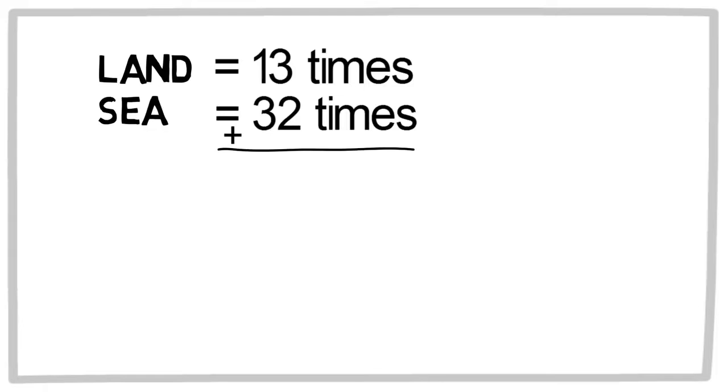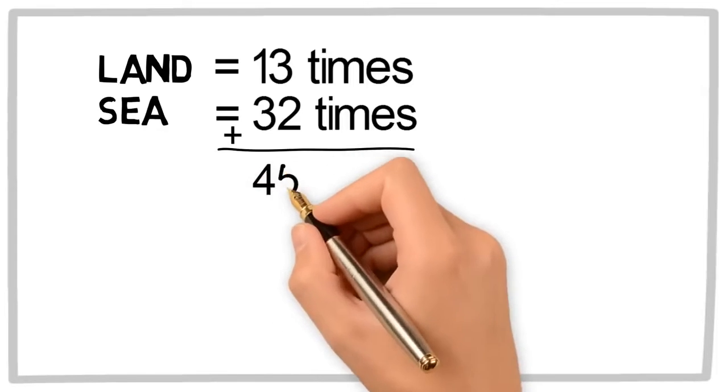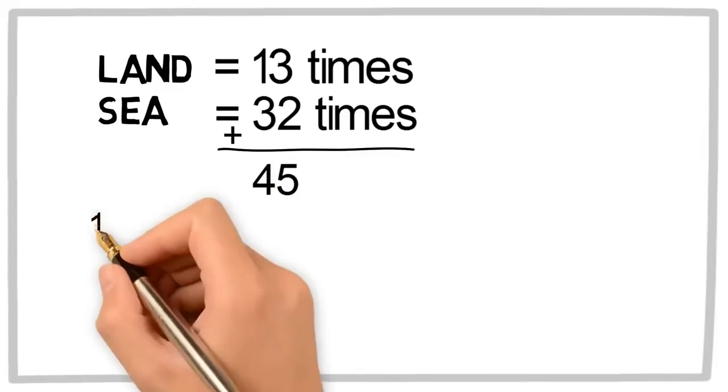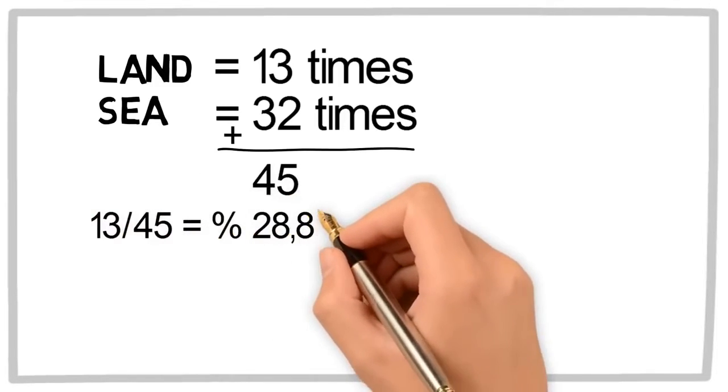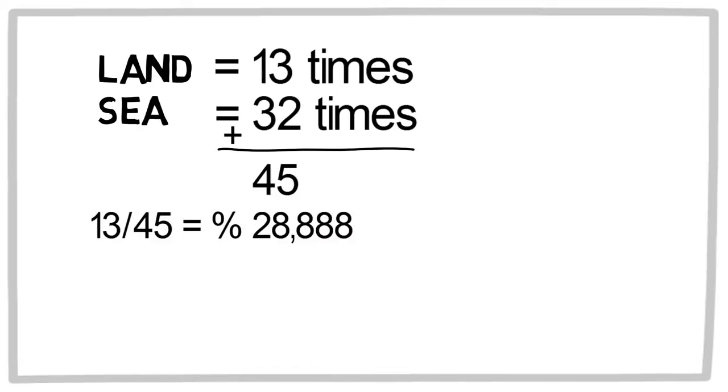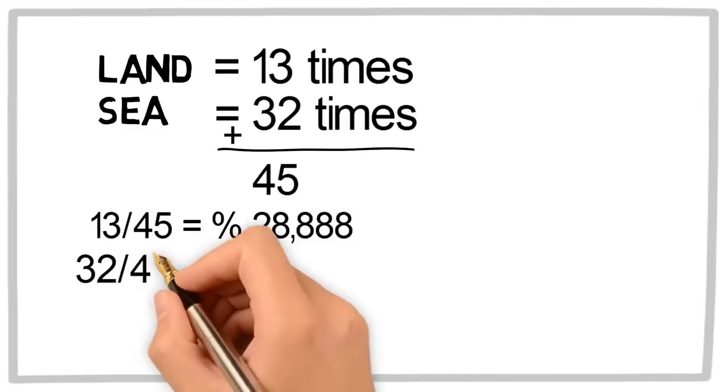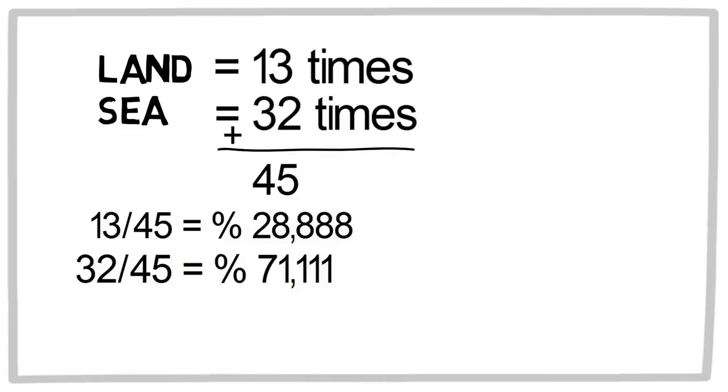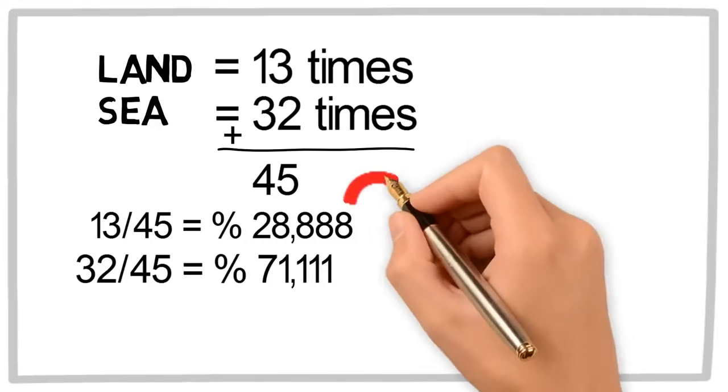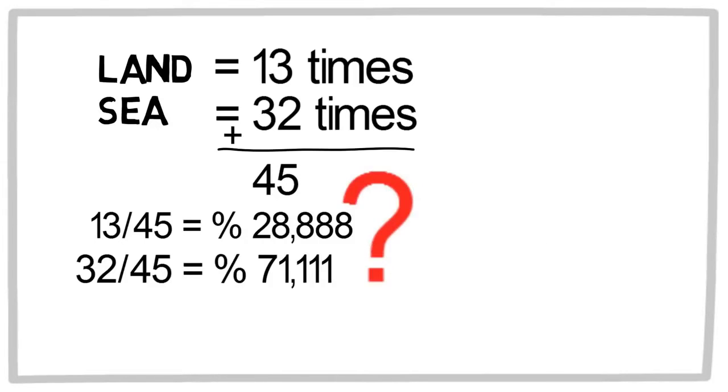13 plus 32 equals 45. And for the percentages, if you divide 13 by 45, you're going to have 28.88 percent. And 32 divided by 45 for the word sea, you're going to have 71.11 percent.